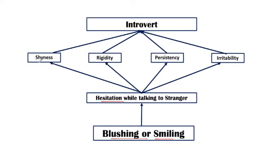Ab third tier mein, jo unke habitual responses the, unse relative traits ko consider kiya — like shyness, rigidity ho sakti hai kisi person ki ki main nahi baat karta stranger se, persistency, irritability — sab unhone relative traits consider kiya. Phir jo relative traits conclude kiye gaye, unko unhone conclude kiya into a single personality type — that is introvert. Yeh unka ek hierarchical model tha jo unhone define kiya kisi bhi person ki personality ko define karne ke liye.